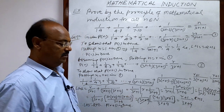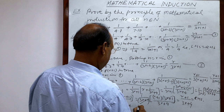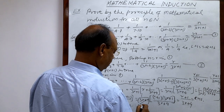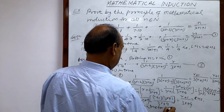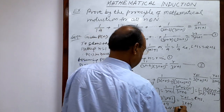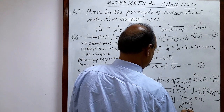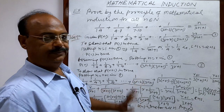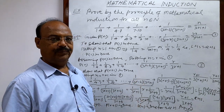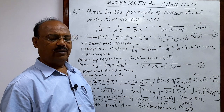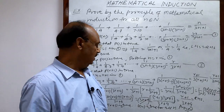At the last step we write: therefore, the given statement P(n) is true for all n belonging to the natural numbers. This question has been proved. I hope you have understood it very well. We will see some more problems in other videos. Thank you very much for watching. Wish you all the best.